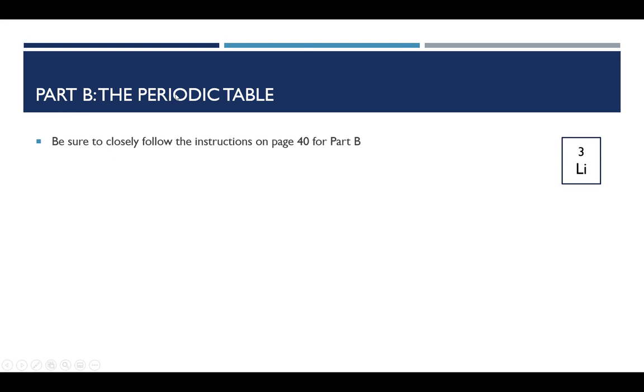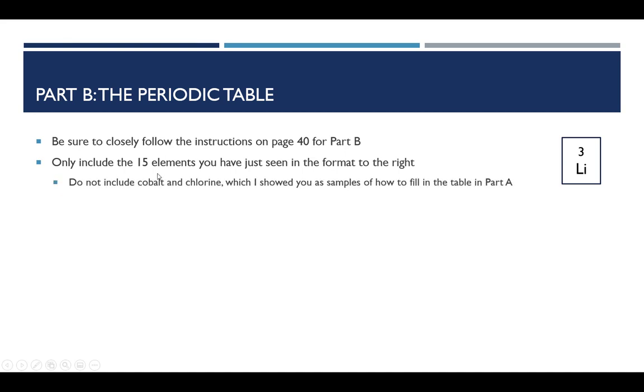So part B is on the periodic table. And over here on the right, I'm showing a fairly typical example of what we might see there. Now, for part B, you need to follow the directions very carefully. I'm not going to necessarily go through every step, so please don't say you didn't mention that. No, the instructions are on page 40. Follow them very exactly. You only want to include the 15 elements from part A, the ones that you've just seen the pictures of. And that does not include cobalt or chlorine, which I just showed as examples. And for those 15 elements, and only those 15 elements, you want to fill them in, in their respective boxes, just like this. So the number, and then it's simple. Don't worry about the name of the element, don't worry about the atomic mass, just the number and the name of the element.